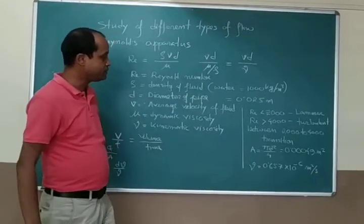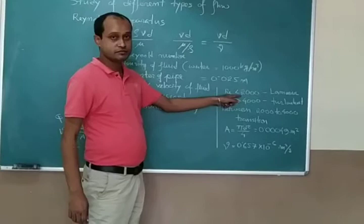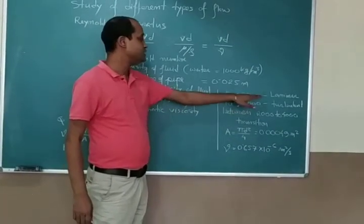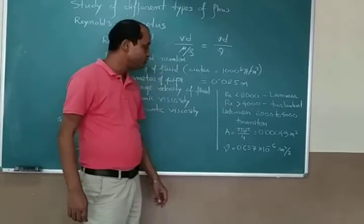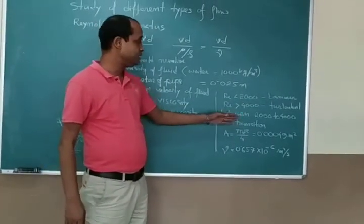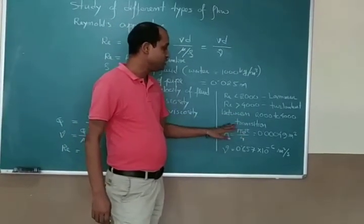One thing you have to remember: if the Reynolds number is less than 2000 or sometimes less than 2100, it is treated as laminar flow. If it is more than 4000, then it is turbulent. In between 2000 and 4000 is called transition.